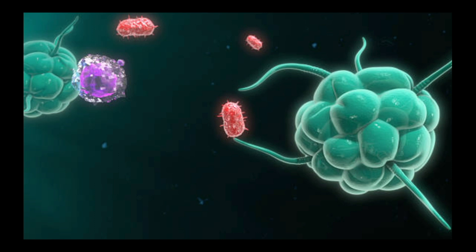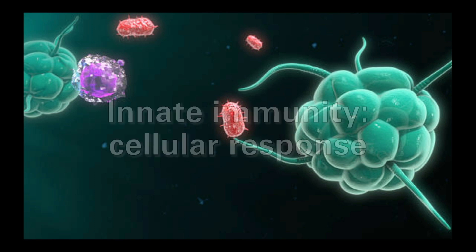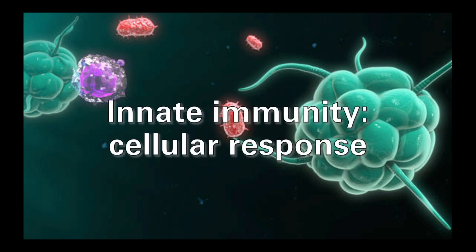In the last video we looked in depth at the physical and chemical barriers that line the surface of the body to repel, detect and destroy potential pathogens. However, as we have all experienced, sometimes these physical and chemical barriers are not enough and the outer layer of our defences can be breached. When this happens the soluble and cellular components of the innate response come into play, and we will be mainly looking at the cellular components in this video.